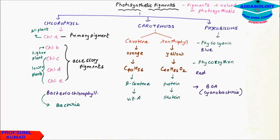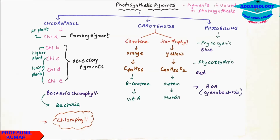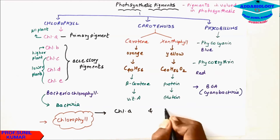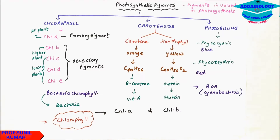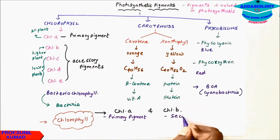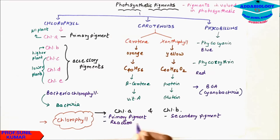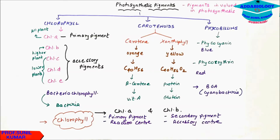Now let's see the structure of chlorophyll. The most important chlorophylls that come in exams are chlorophyll a and chlorophyll b. Chlorophyll a is called the primary pigment and the reaction center because it converts light energy into chemical energy, while chlorophyll b is called the accessory or secondary pigment and accessory center. Chlorophyll a is bluish-green in color, while chlorophyll b is olive-green in color.